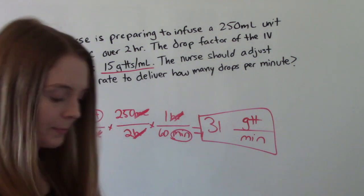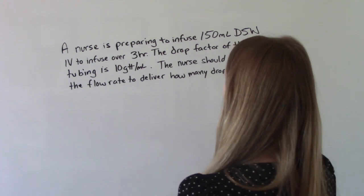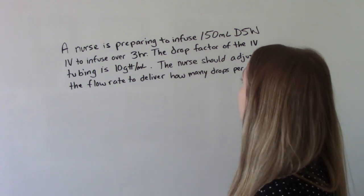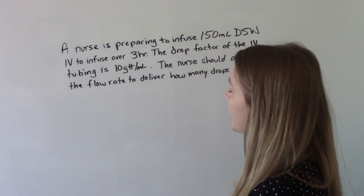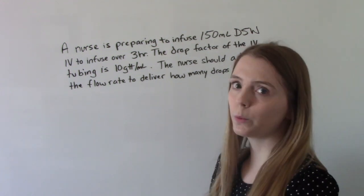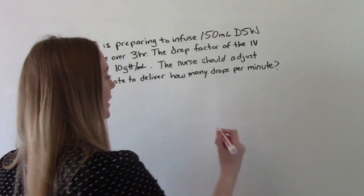Let's do another. A nurse is preparing to infuse 150 ml's D5W IV to infuse over 3 hours. The drop factor of the IV tubing is 10 drops per ml. The nurse should adjust the flow rate to deliver how many drops per minute. So that's what we're looking for in our answer.